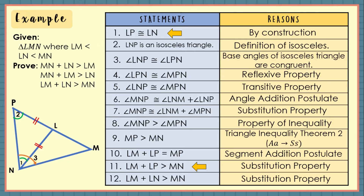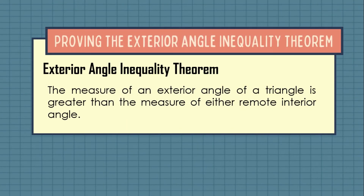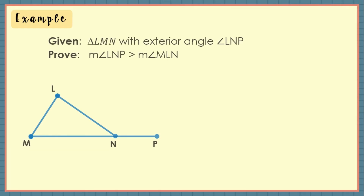Now let us move on with the exterior angle inequality theorem, which states that the measure of an exterior angle of a triangle is greater than the measure of either remote interior angle. Let us have an example. Given triangle LMN with exterior angle LNP, prove that the measure of angle LNP is greater than the measure of angle MLN.